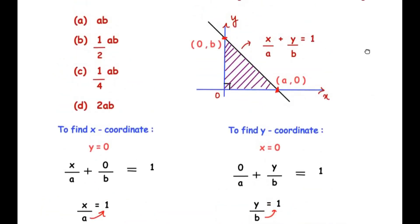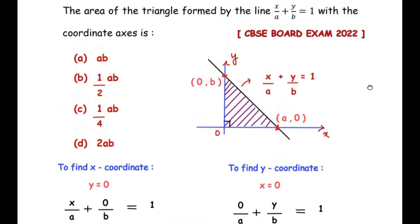Now since we have to find out the area of the triangle, and we can see that this is a right-angled triangle. Now, the base of the triangle is a, that is from origin till this point a. And the height of this right-angled triangle is from 0 till b. So we have the base, we have the height.